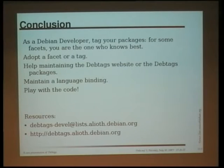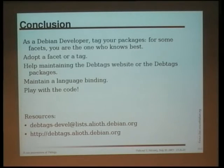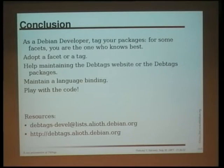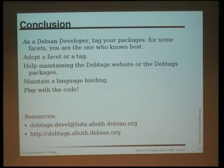The things you can do as Debian developers: tag your packages. It's kind of hard to begin with because there are a lot of tags, but I direct you to some tags you know. You are the best one to know — like the 'implemented in' facet, what language the package is implemented in. You know it because you are the maintainer of it, you compile it, so no one better than you can enter that data.